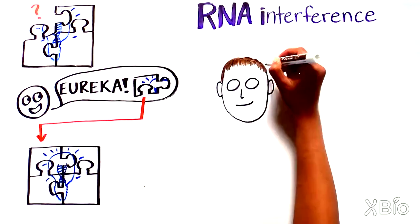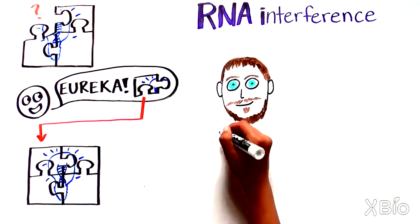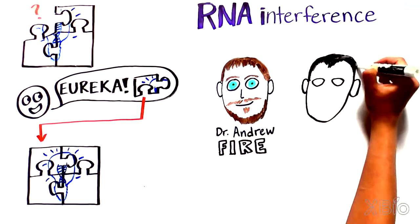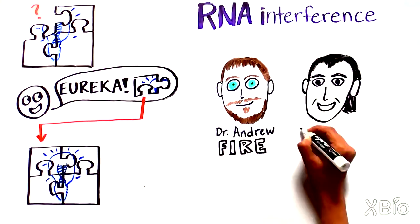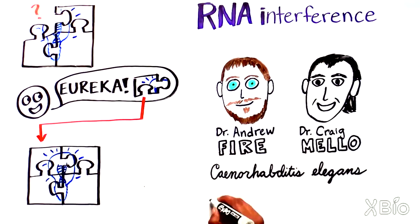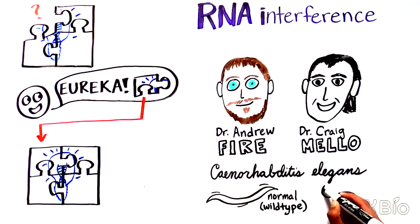Often, revolutionary discoveries come from scientists following an unusual observation during their studies. For doctors Andrew Fire and Craig Mello, that came when they saw a mutant strain of C. elegans, a type of worm commonly used as an animal model, display an unusual twitching behavior.